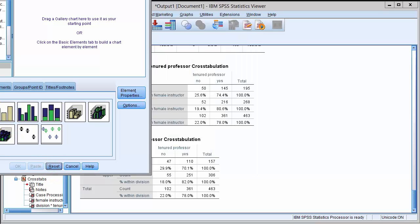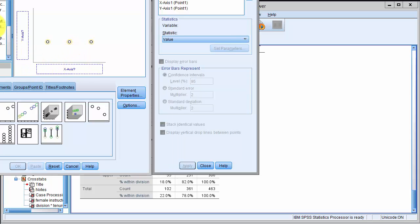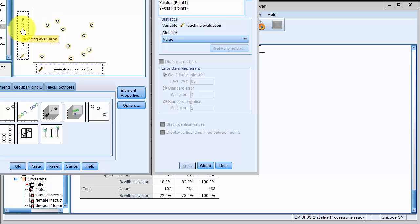Select the scatter plot, drag this here and click on normalize beauty score, bring it on x-axis. Teaching evaluation score goes on y-axis and that's pretty much it.